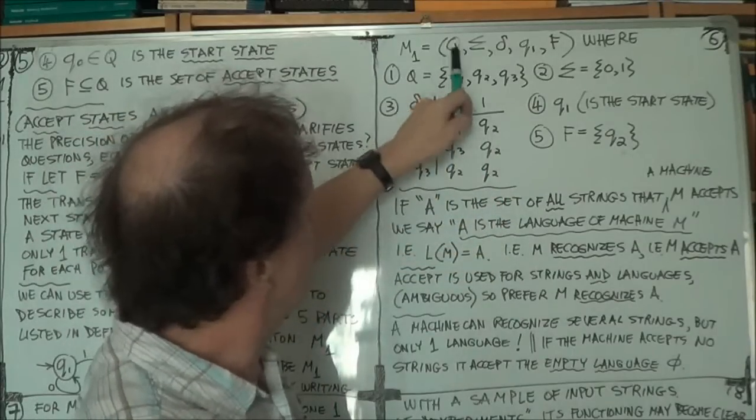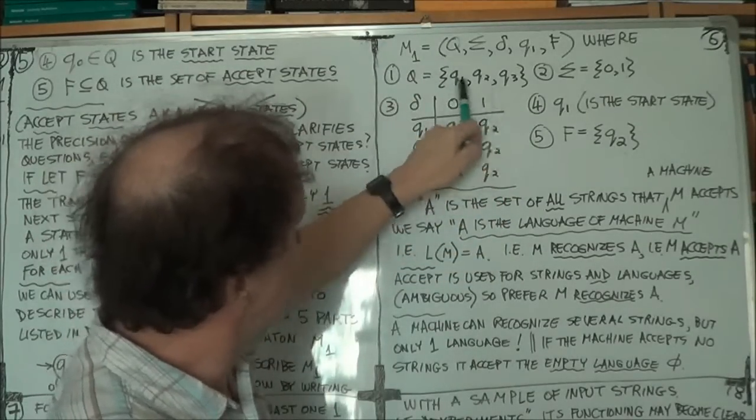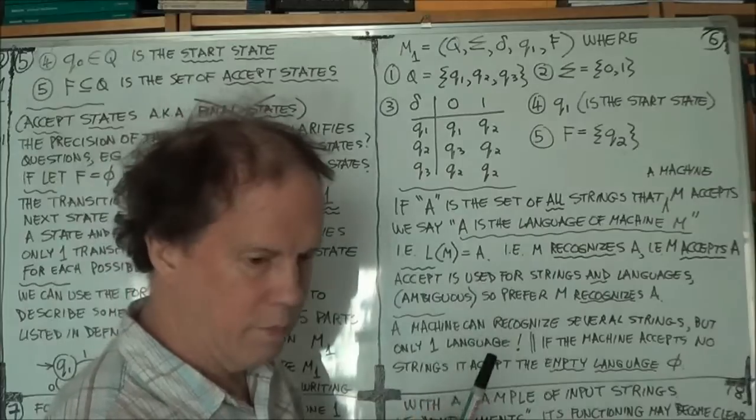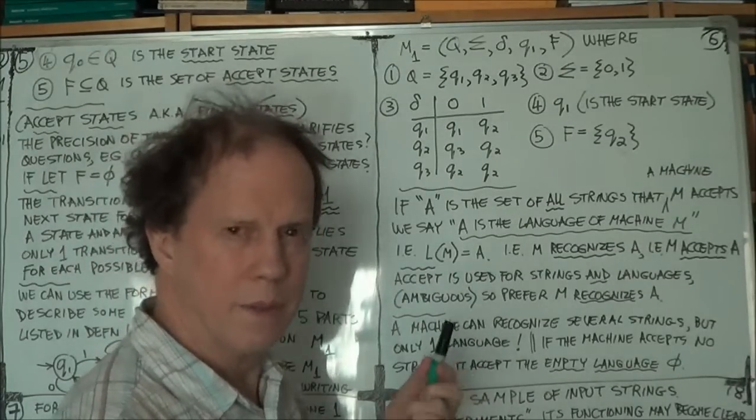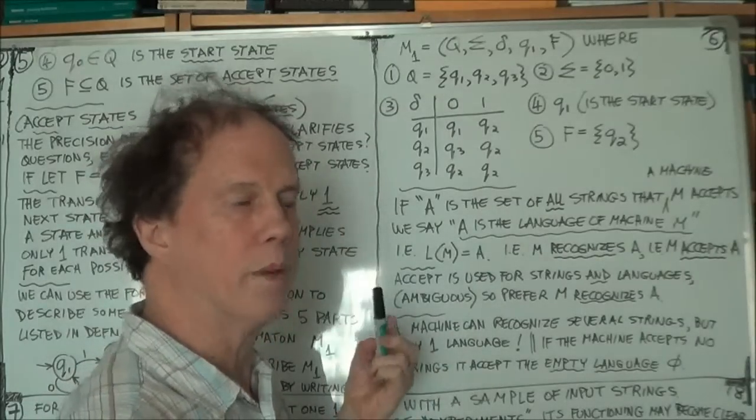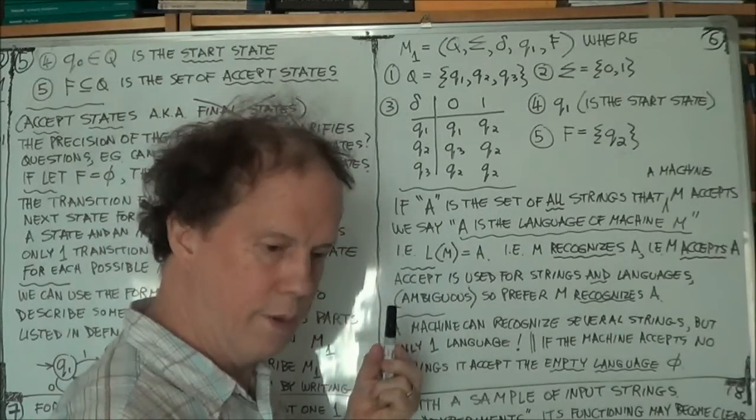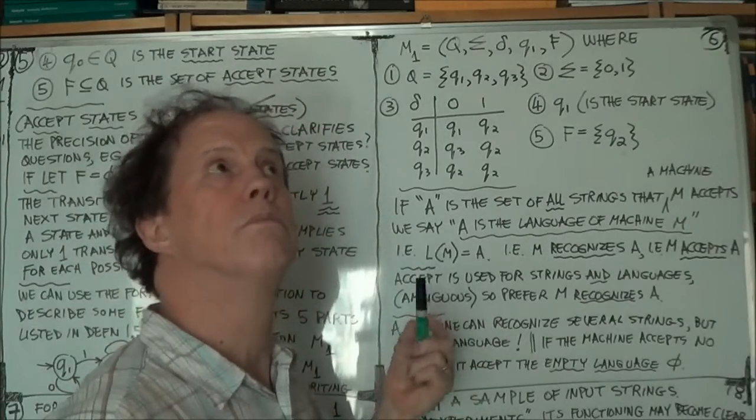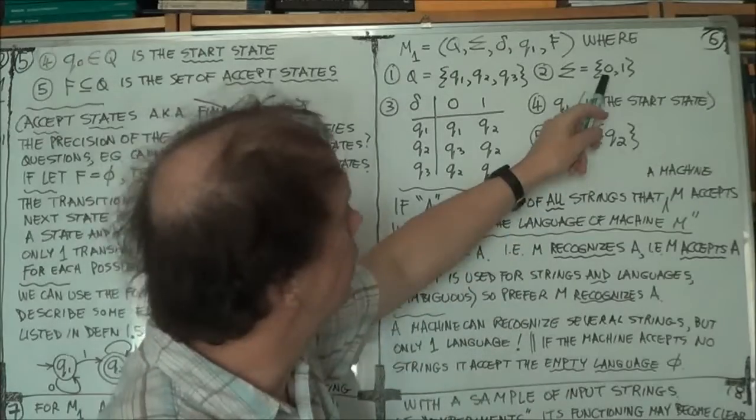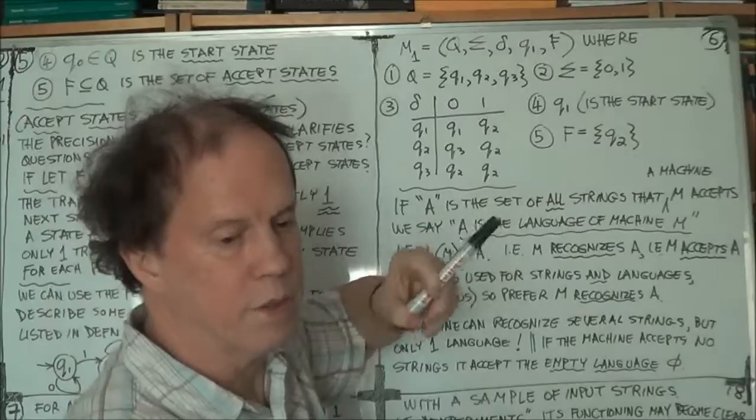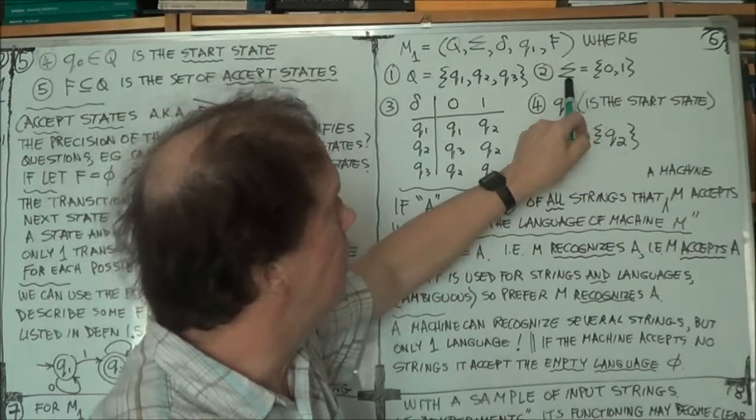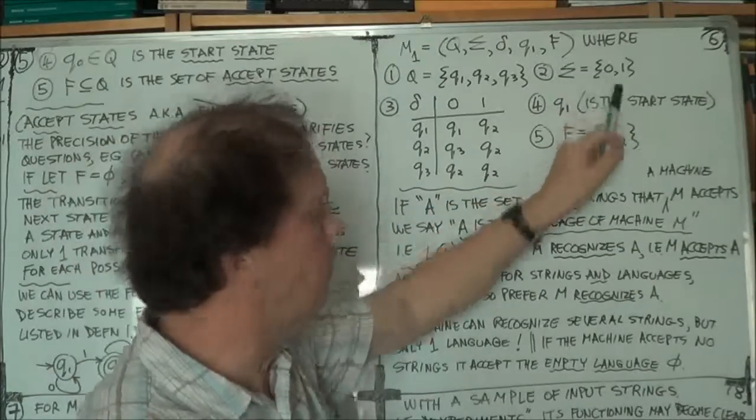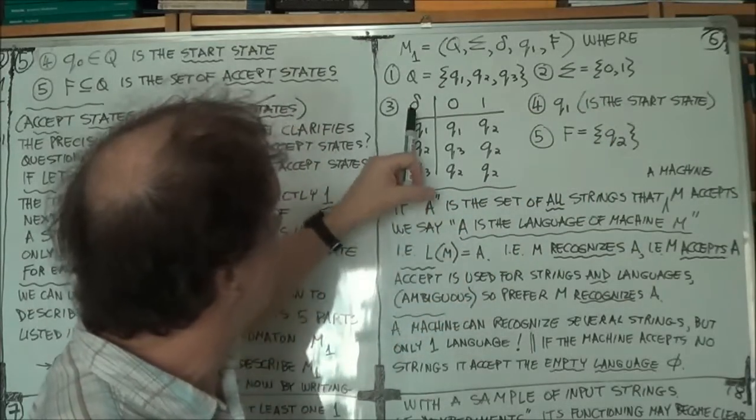Now the set of states, big Q, well it's just Q1, Q2, Q3, pretty obvious. Now sigma, remember capital sigma, remember what that is? That's your alphabet. And what's an alphabet? It's the set of allowed symbols that can appear in your input string. Now M1, its input is a binary string. So your alphabet will be just the set of 0 and 1. So that's sigma. Pretty obvious.